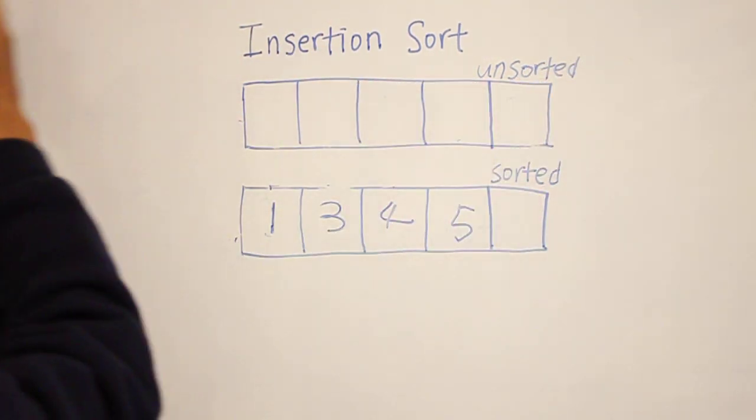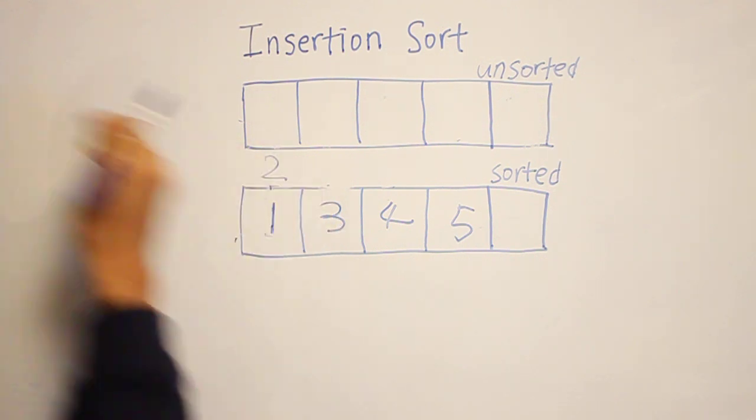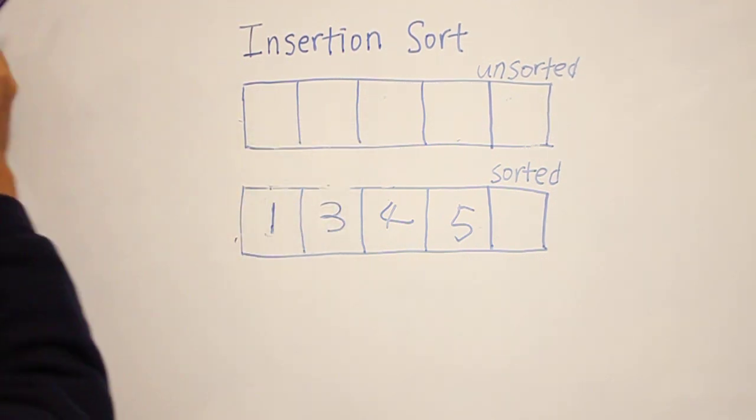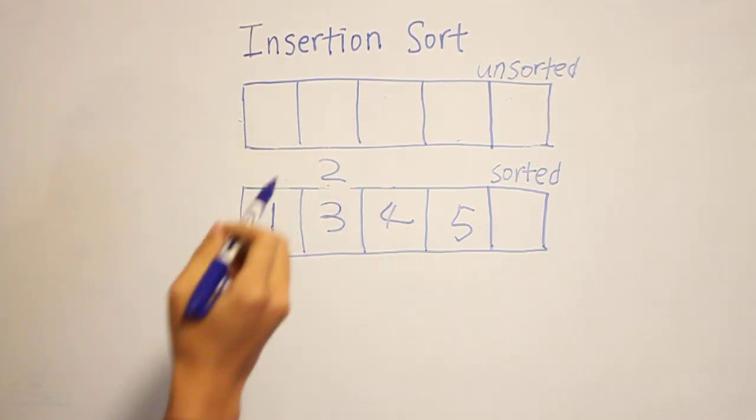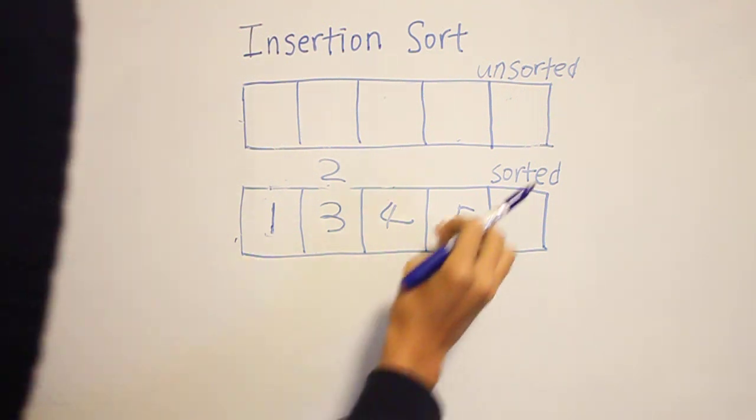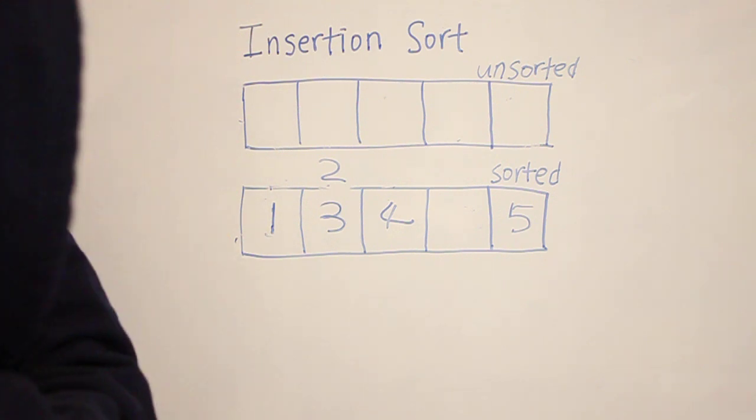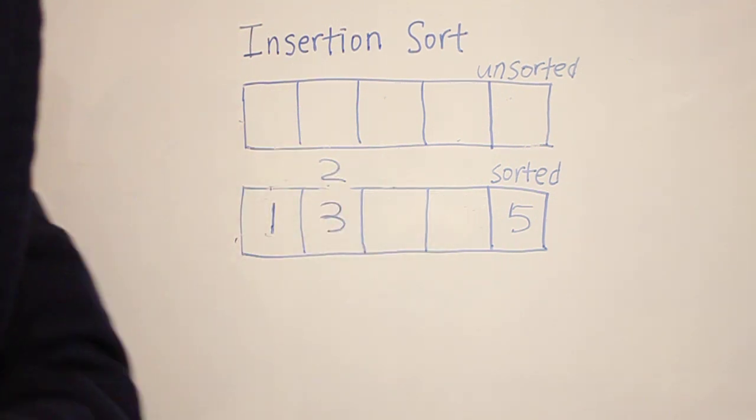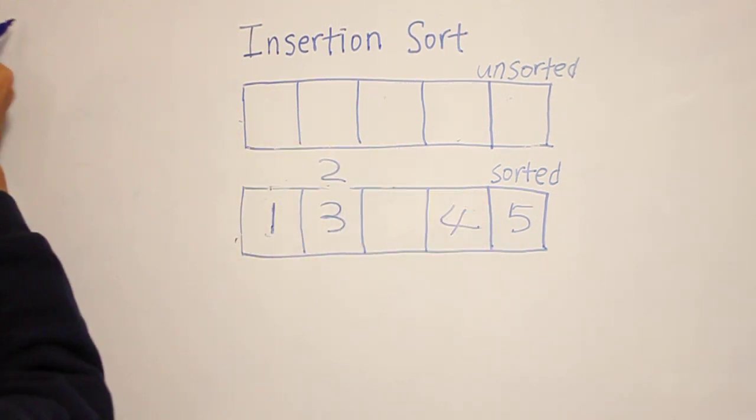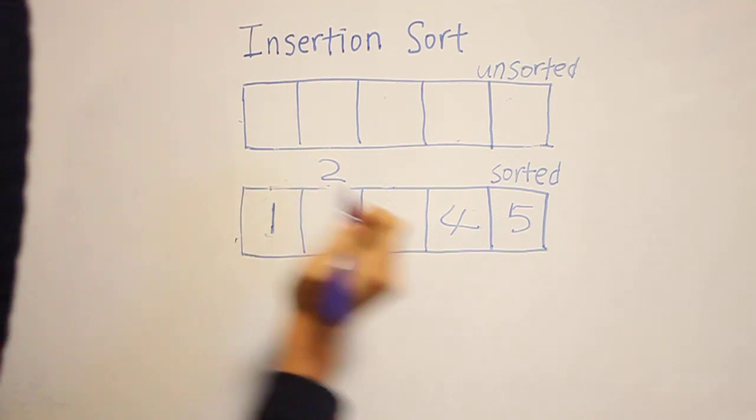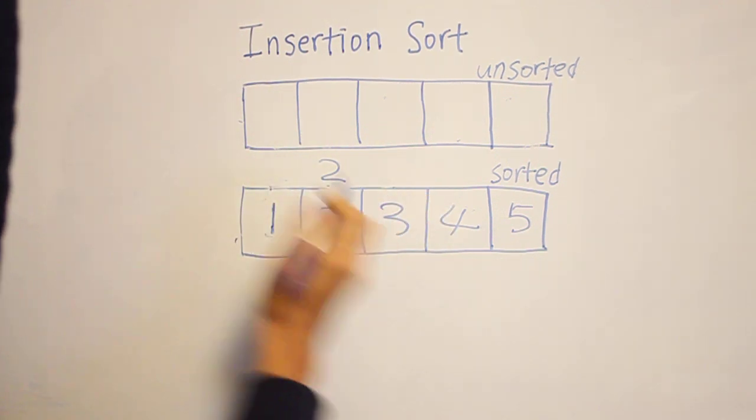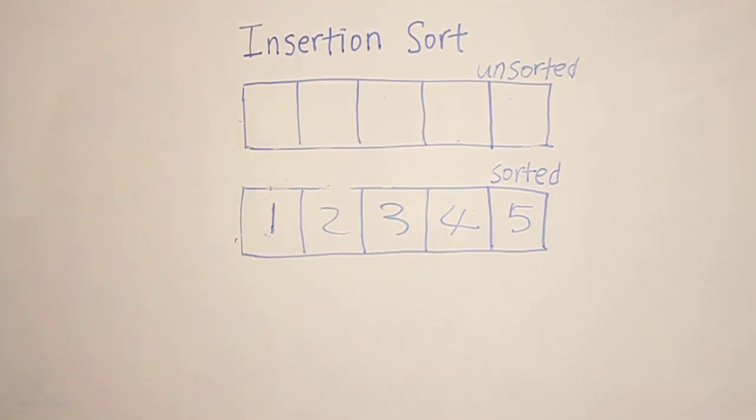The last element, we take two, compare it to one, it's bigger, and three, it's smaller than three. So now we have to move five to here, and then four to here, three to here, and then lastly, we have the sorted area.